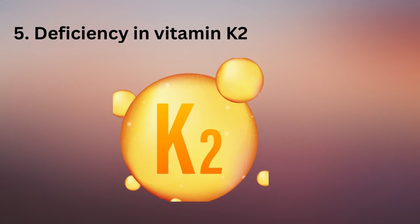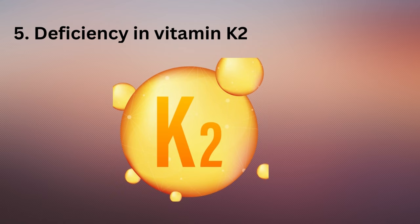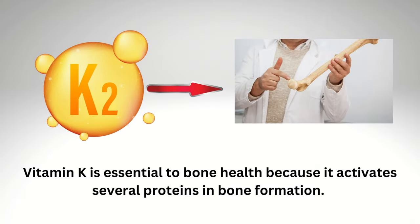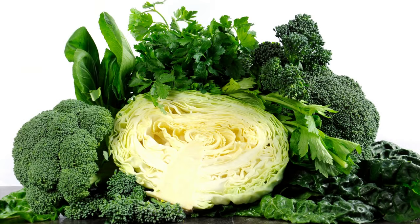Fifth, deficiency in vitamin K2. Without enough vitamin K2, you may have lower bone density and a higher risk of hip fracture. Vitamin K is essential to bone health because it activates several proteins involved in bone formation. Poor dietary intake of vitamin K is associated with bone loss and fractures. You can find vitamin K in dark leafy vegetables.